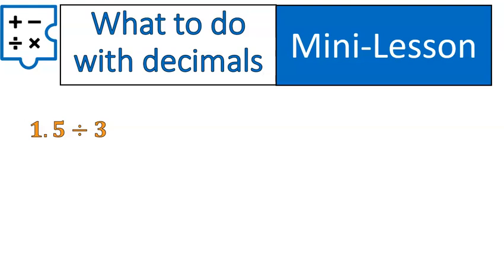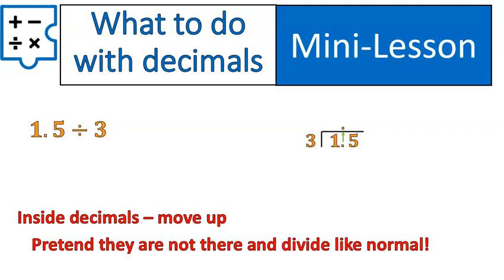We're starting with our first question, 1.5 divided by 3. The way that we would write this for long division is basically switching the order of the numbers. The first number goes inside the division symbol, the second number is outside. When you do have a decimal as the first number or inside the division symbol, what you do is move that decimal up. Then you pretend the decimals are not there, and you divide like normal.